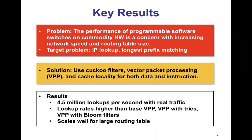Here is a summary of the key results from this work. We tackle the following problem: the performance of programmable software switches on commodity hardware is a concern with increasing network speed and routing table size. Specifically, our target problem is how to improve the longest prefix matching in IP lookup. To solve this problem, we use vector packet processing, also known as VPP, with the cuckoo filters for preliminary filtering of network prefixes. Both VPP and cuckoo filter use cache locality for data and instruction to achieve speedup in packet processing. Our results show that QVPP provides 4.5 million lookups per second, and its lookup rates are higher than base VPP, VPP with tries, and VPP with bloom filters. Also, it scales well for a large routing table.